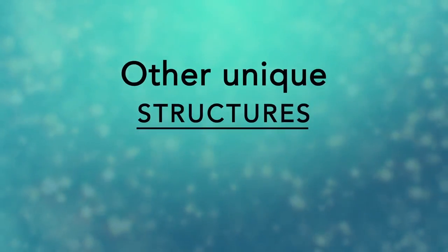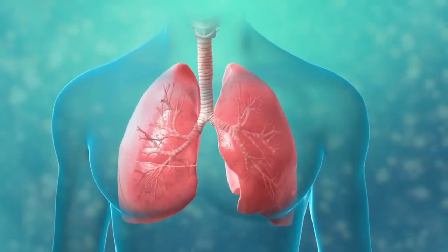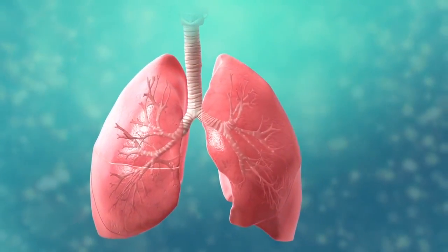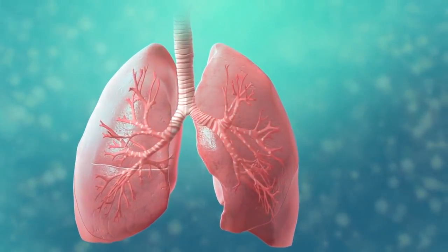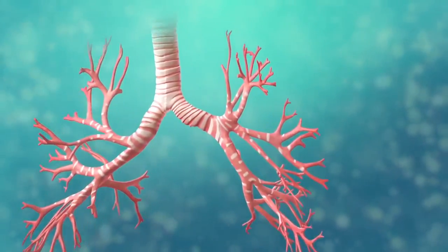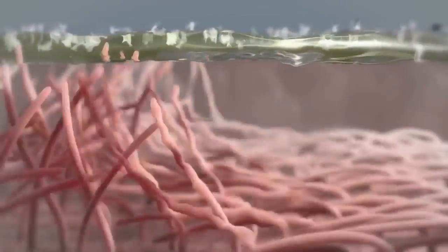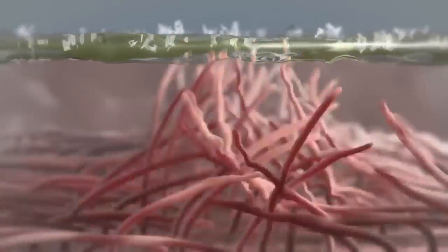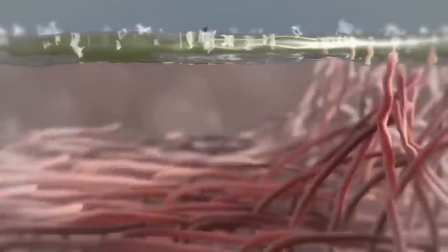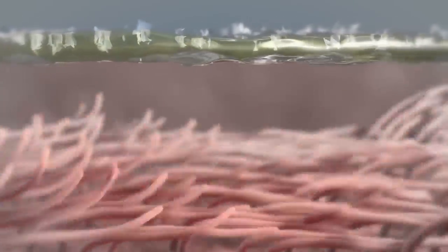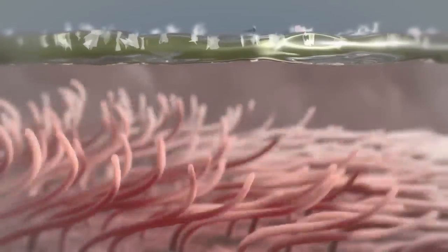There are many other unique structures that only some cells have. Here are just a few. In humans, for example, the respiratory tract is lined with cells that have cilia. These are microscopic hair-like projections that can move in waves. This feature helps trap inhaled particles in the air and expels them when you cough.